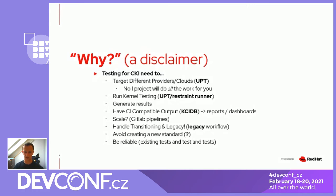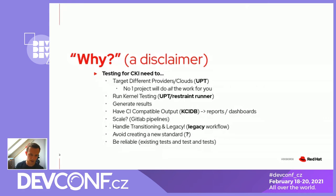We also wanted to handle transitioning and legacy workflows, because we use Beaker quite a lot still, and that legacy workflow people have is not going to disappear at the wave of a magic hand. People have their scripts and ways of working. The idea was to offer some helping hand there, to try to avoid creating new standards, and to be reliable with kernel testing — because if you're doing something non-standard with a machine hoping to break it, you want to get the results out reliably. The test runner uses restraint, which has been quite reliable.